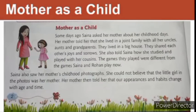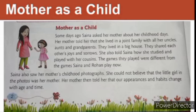They lived in a joint family with all her uncles, aunts and grandparents — in a big house. Since joint family is a big family, it needs a big house. They shared each other's joys and sorrows. Underline the word 'joys' — J-O-Y-S — and 'sorrows' — S-O-R-R-O-W-S. Joys means happiness and sorrows means sadness. These words are opposites of each other.